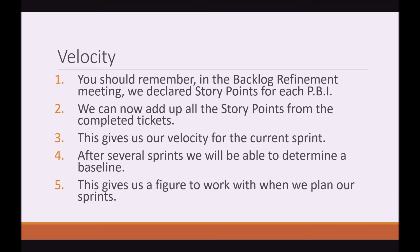In the Backlog Refinement meeting, we declared story points for each PBI — remember, PBI is Product Backlog Item. We can now add up all the story points from the completed tickets, because the PBIs went into the sprints and became sprint items, still carrying their story points. Now that we've completed them and the Product Owner has given his OK, we can add these story points up. The total gives us our velocity for the current sprint.